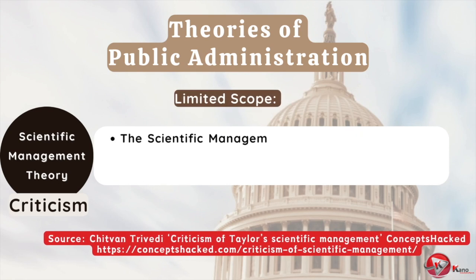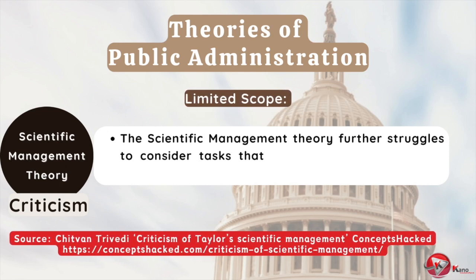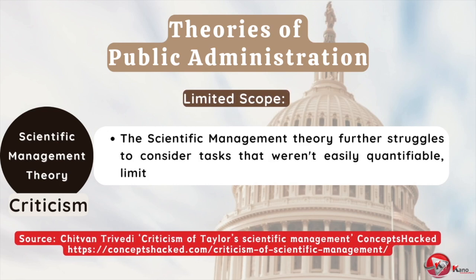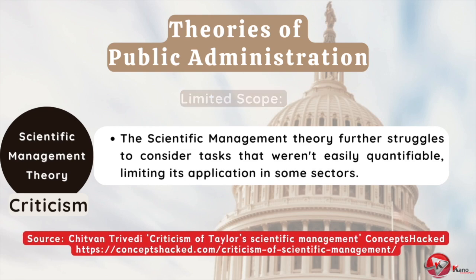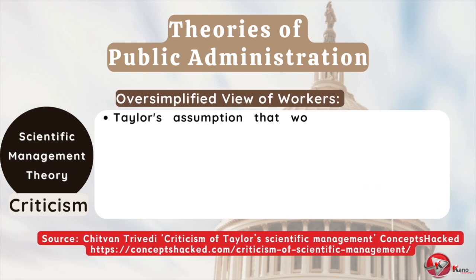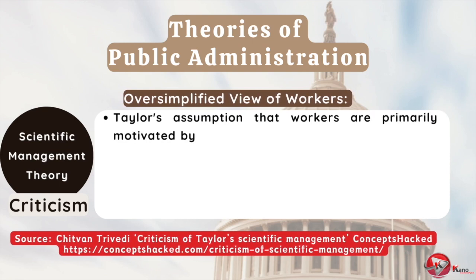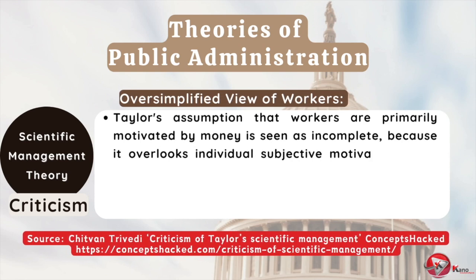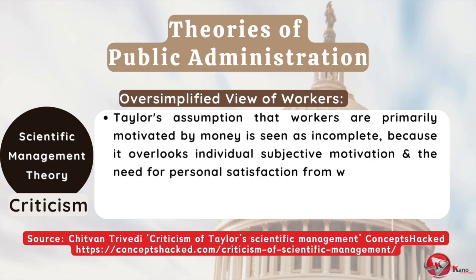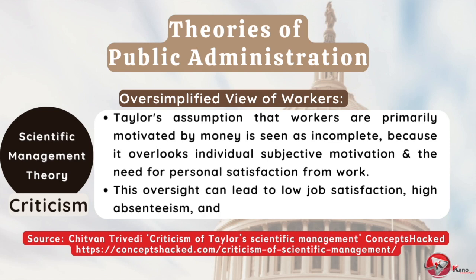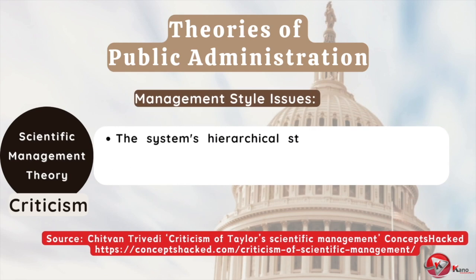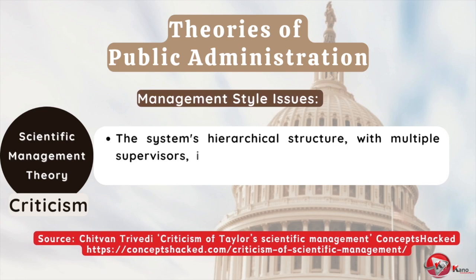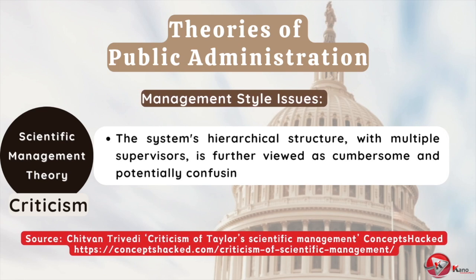The scientific management theory further struggles to consider tasks that weren't easily quantifiable, limiting its application in some sectors. Taylor's assumption that workers are primarily motivated by money is seen as incomplete, because it overlooks individual subjective motivation and the need for personal satisfaction from work. This oversight can lead to low job satisfaction, high absenteeism, and high turnover in certain roles. The system's hierarchical structure, with multiple supervisors, is further viewed as cumbersome and potentially confusing for workers.